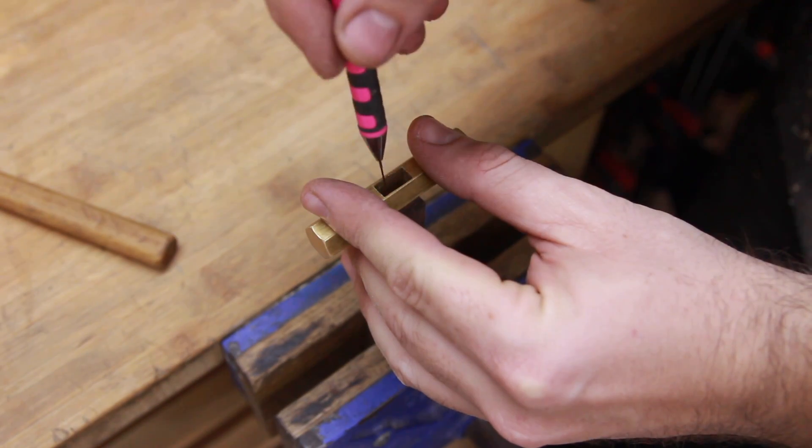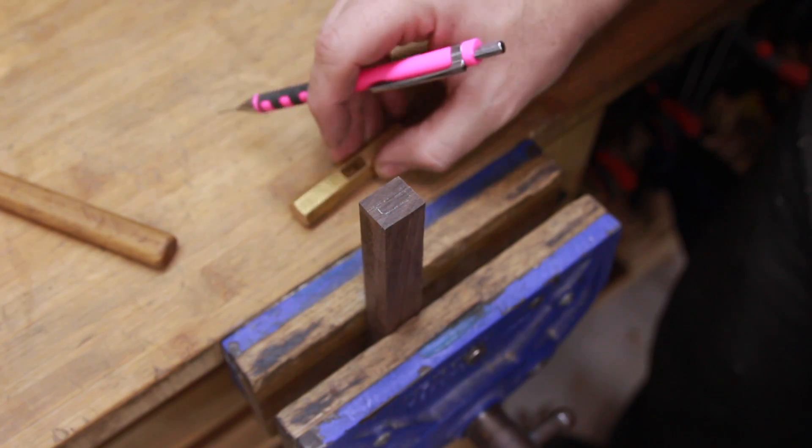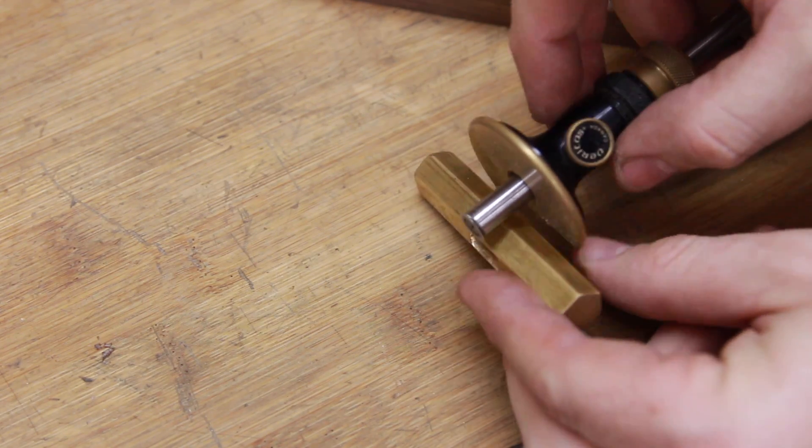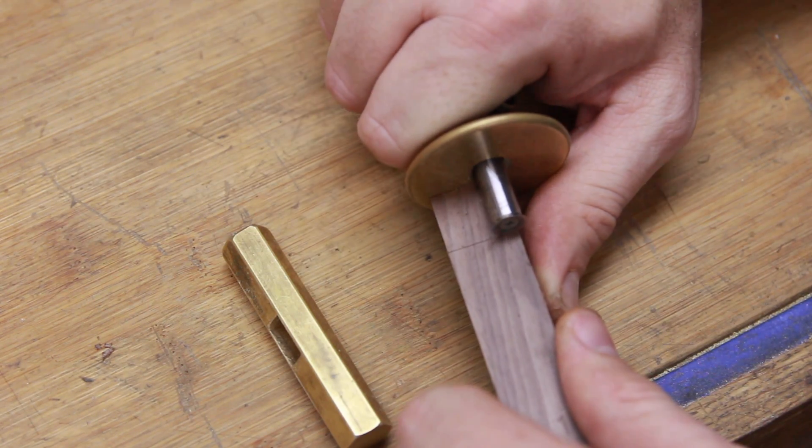I marked roughly the mortise onto the wood, and with the gouge I made the tenon thick, so I can resize it later with the router, plane and chisels.